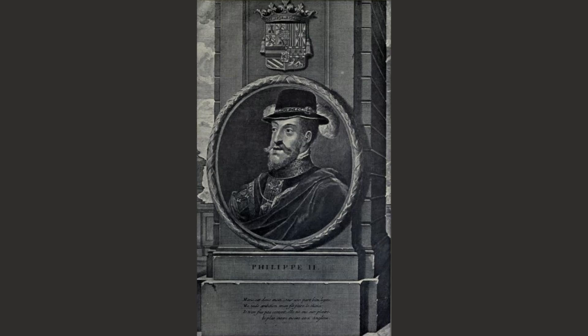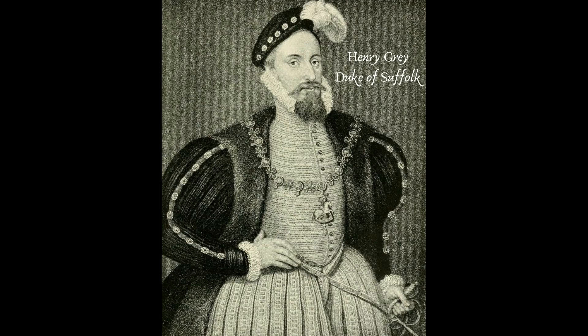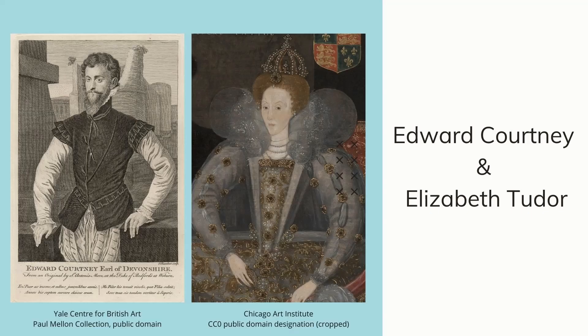Mary now began to arrange a marriage to Philip of Spain, the son of her cousin Charles V, but the prospect of England becoming a satellite to the Spanish Empire, along with her moves to restore Catholicism, rang serious alarm bells for many in her kingdom and caused a revolt known as Wyatt's Rebellion after one of its main leaders, Sir Thomas Wyatt. The plan was to have individual but coordinated risings in different locations around England under the command of different leaders, including Wyatt and Lady Jane Grey's father Henry Duke of Suffolk, whom Mary had only recently pardoned. Once they had displaced Mary, Elizabeth would be proclaimed Queen and married off to her distant cousin Edward Courtenay, Earl of Devonshire, a great-grandson of Edward IV, and these two would then rule together.